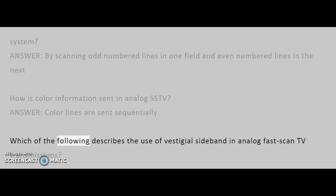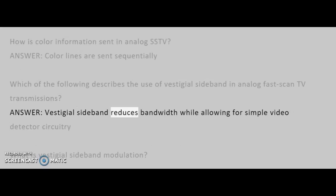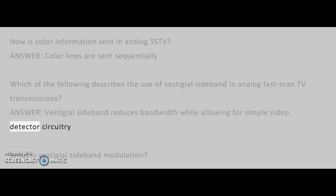Which of the following describes the use of vestigial sideband in analog fast-scan TV transmissions? Answer: Vestigial sideband reduces bandwidth while allowing for simple video detector circuitry.